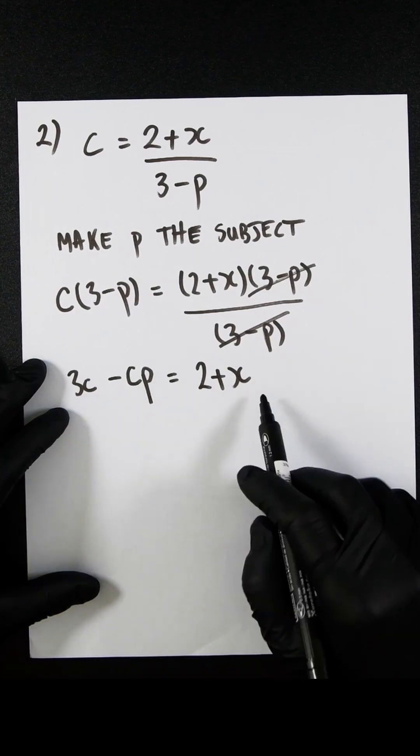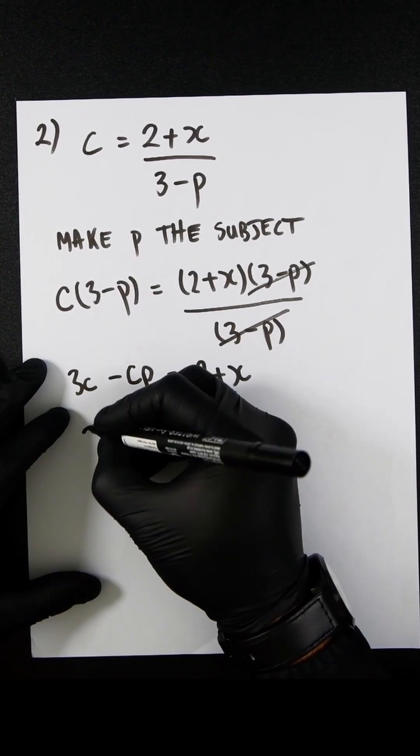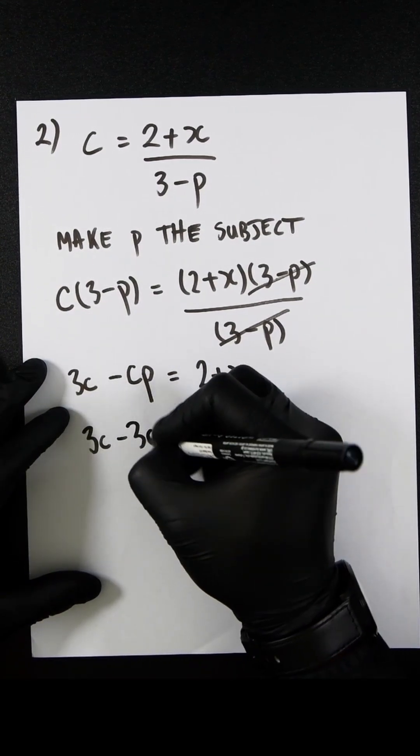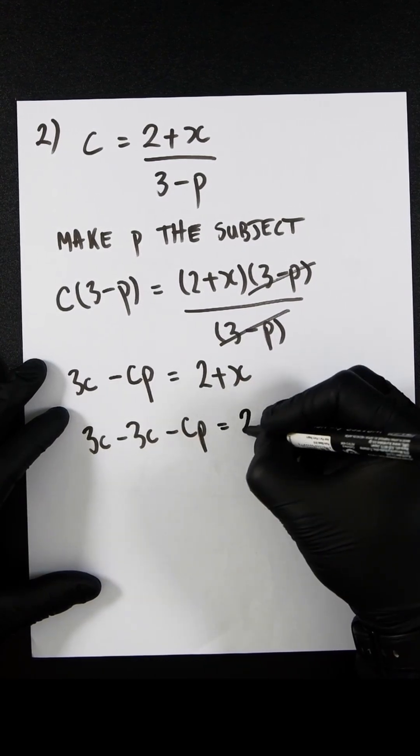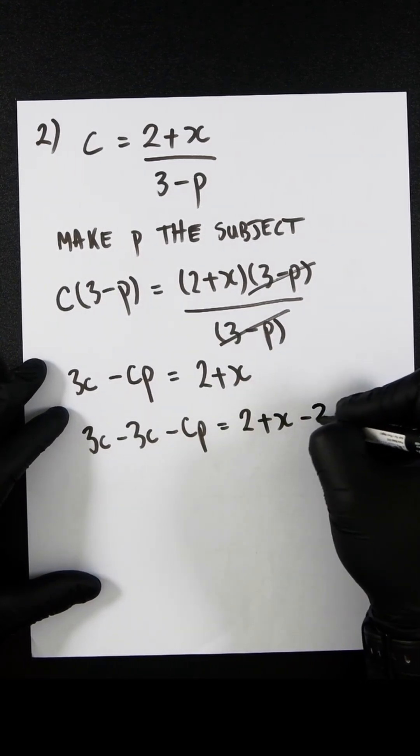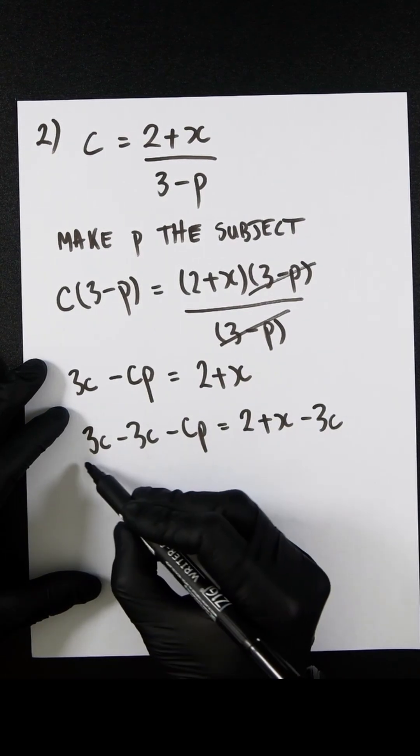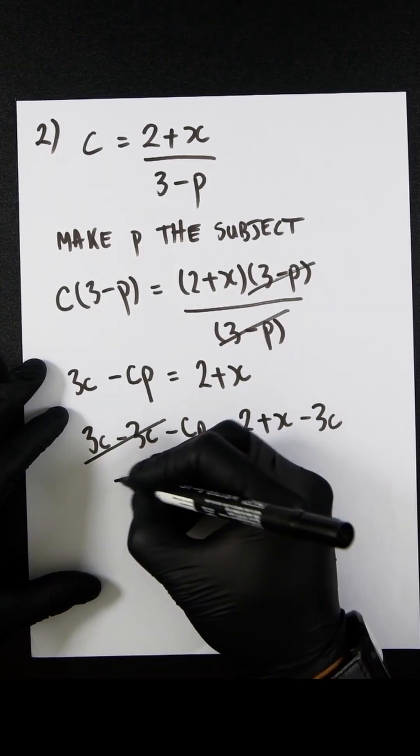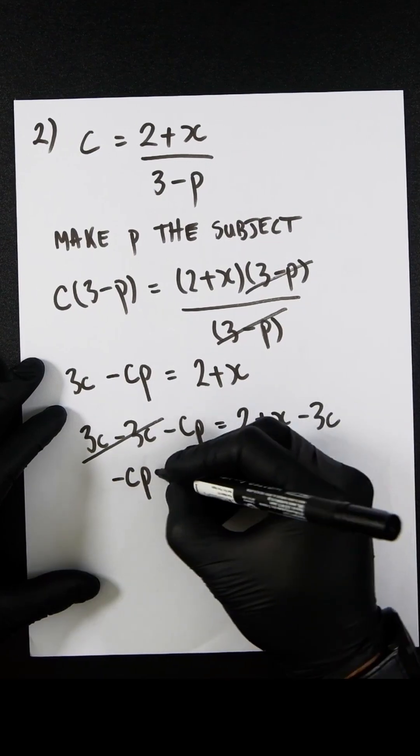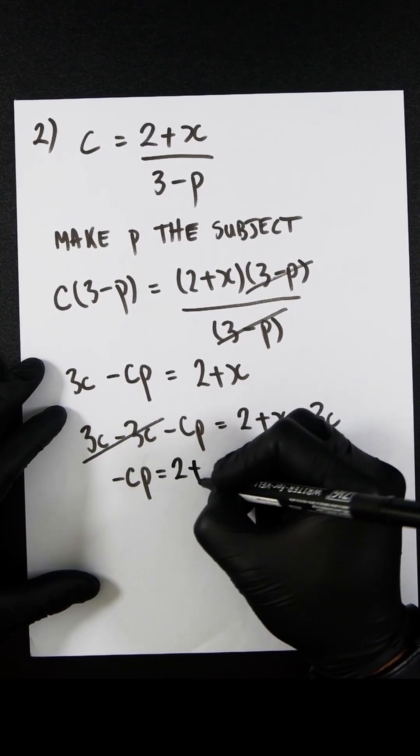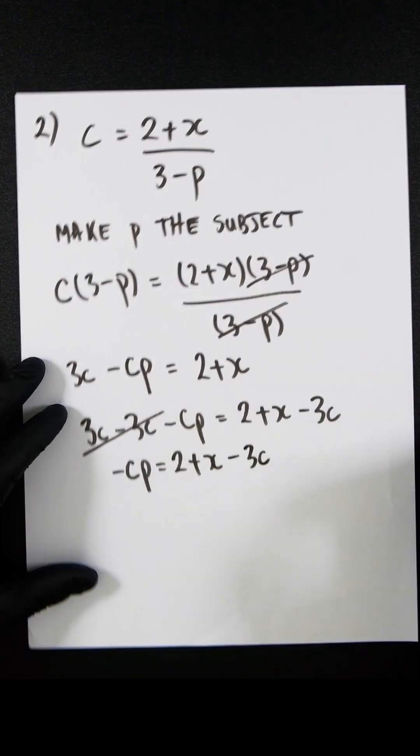We can now subtract 3c from both sides, so we get 3c minus 3c minus cp equals 2 plus x minus 3c. These will cancel out, leaving minus cp equals 2 plus x minus 3c.